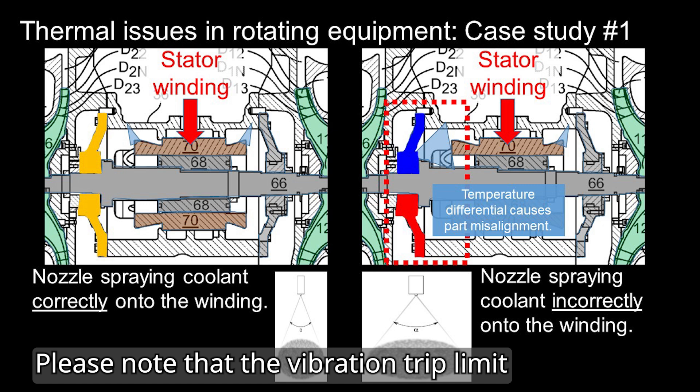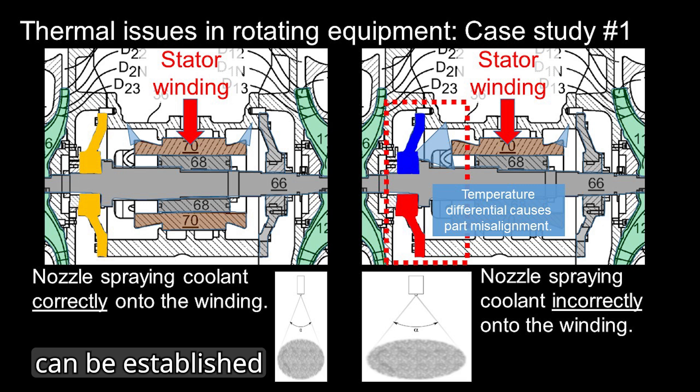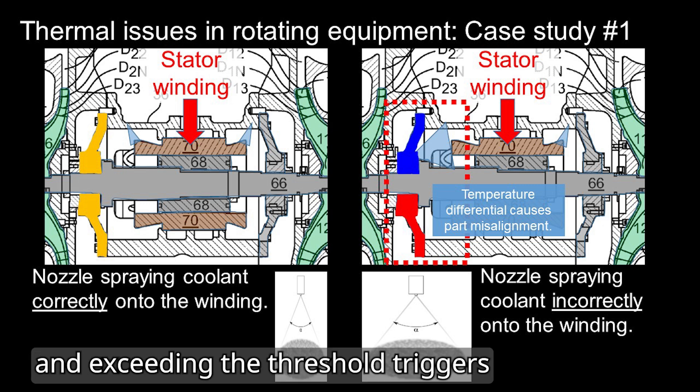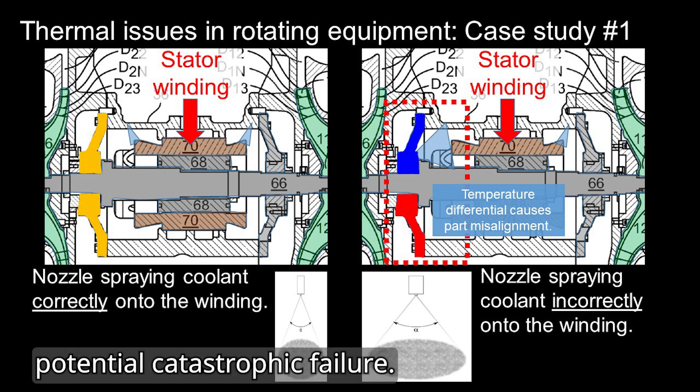Please note that a vibration trip limit can be established for your machine, and exceeding this threshold triggers a shutdown to prevent potential catastrophic failure. Without a defined trip limit, the risk of severe equipment damage grows.